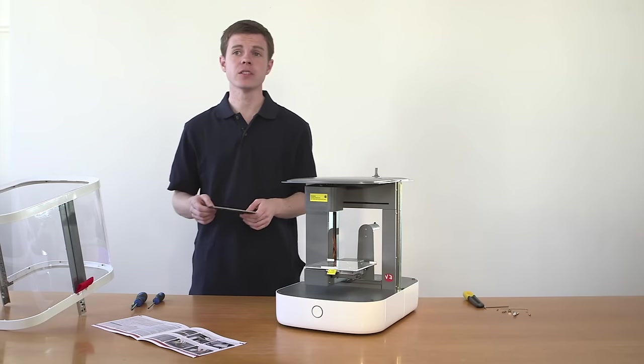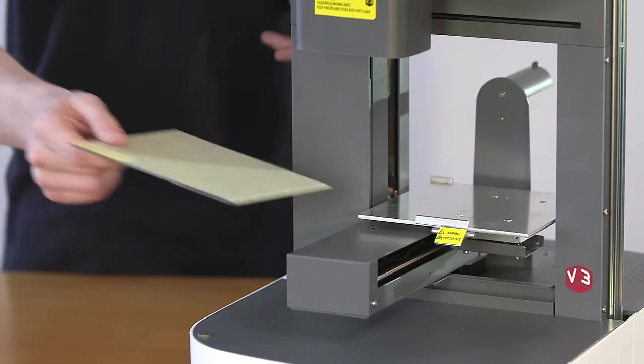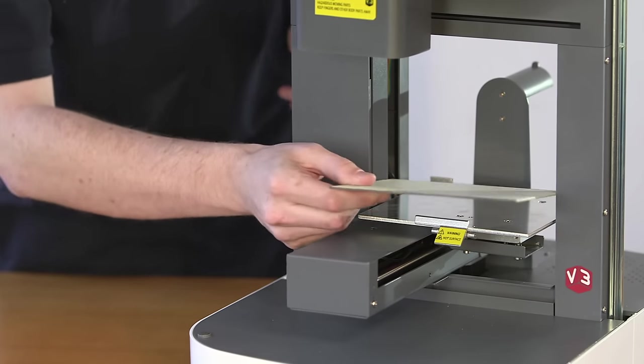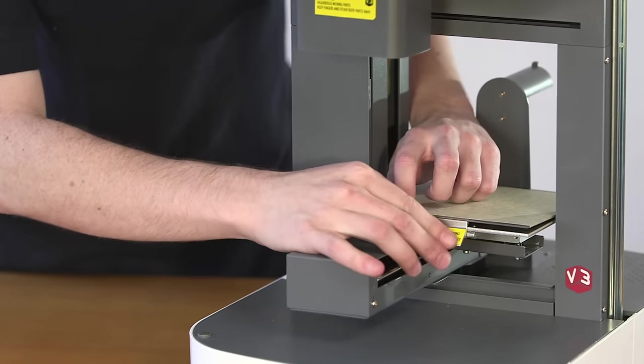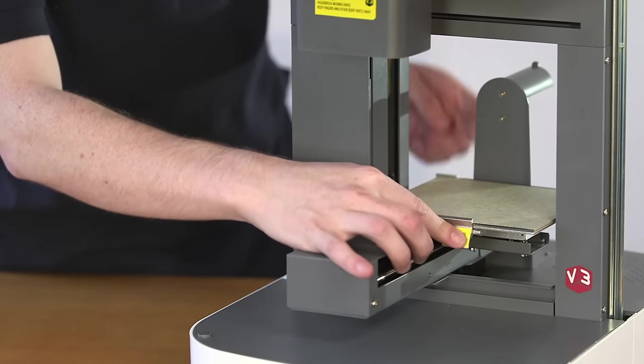Fit the build plate to the build plate base. Lock in the two corner recesses at the back and then the centre recess at the front clip. Make sure it's securely bedded down and clipped into place.